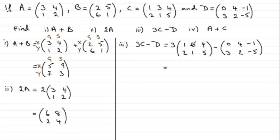So if we work out what 3C is first of all, we do 3 times each of these elements and that's going to give us 3, 9, and 12 on the top row, and then 6, 3, and 15 on the bottom row. A matrix with dimensions 2x3, and we are subtracting again a 2x3 matrix, so it's possible to do this.